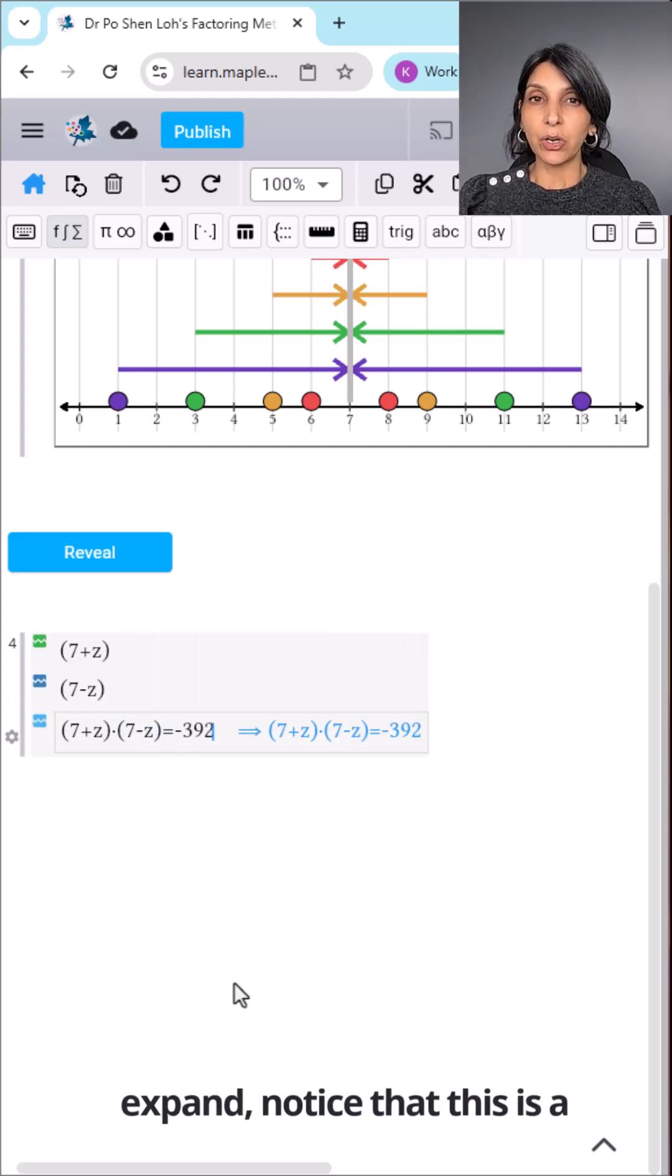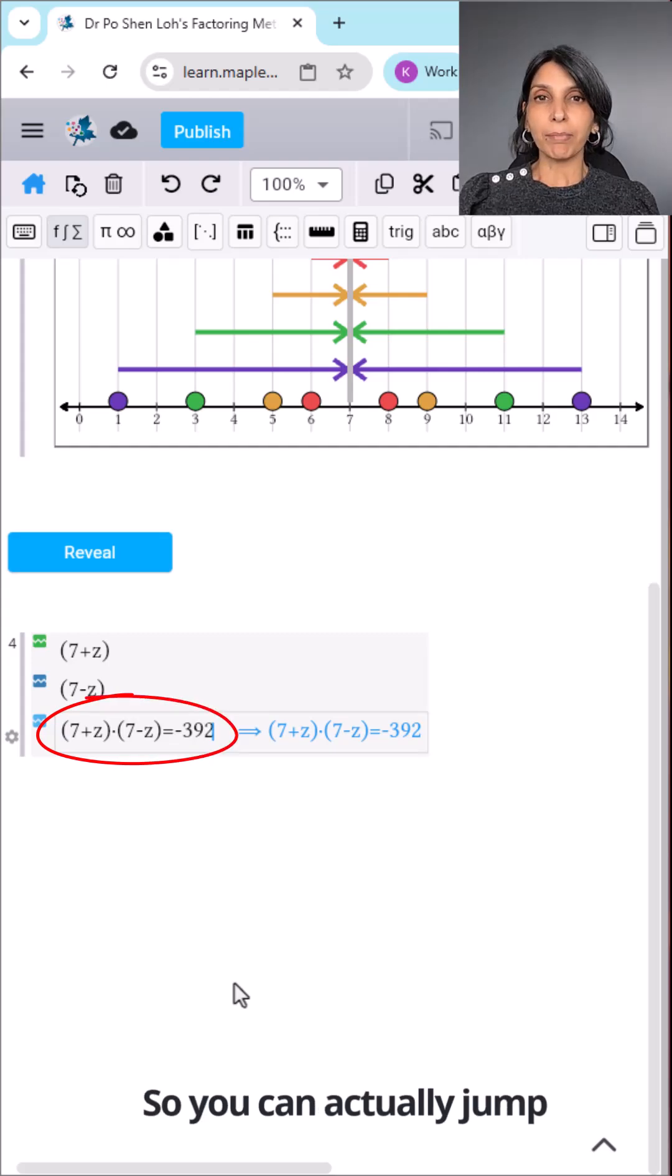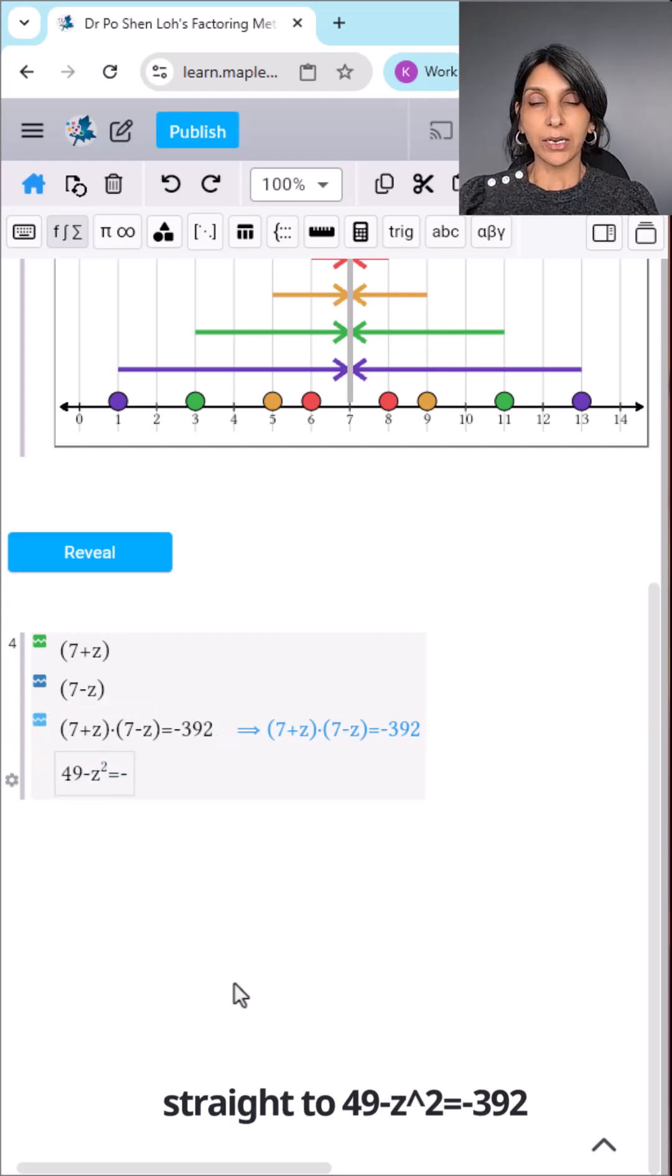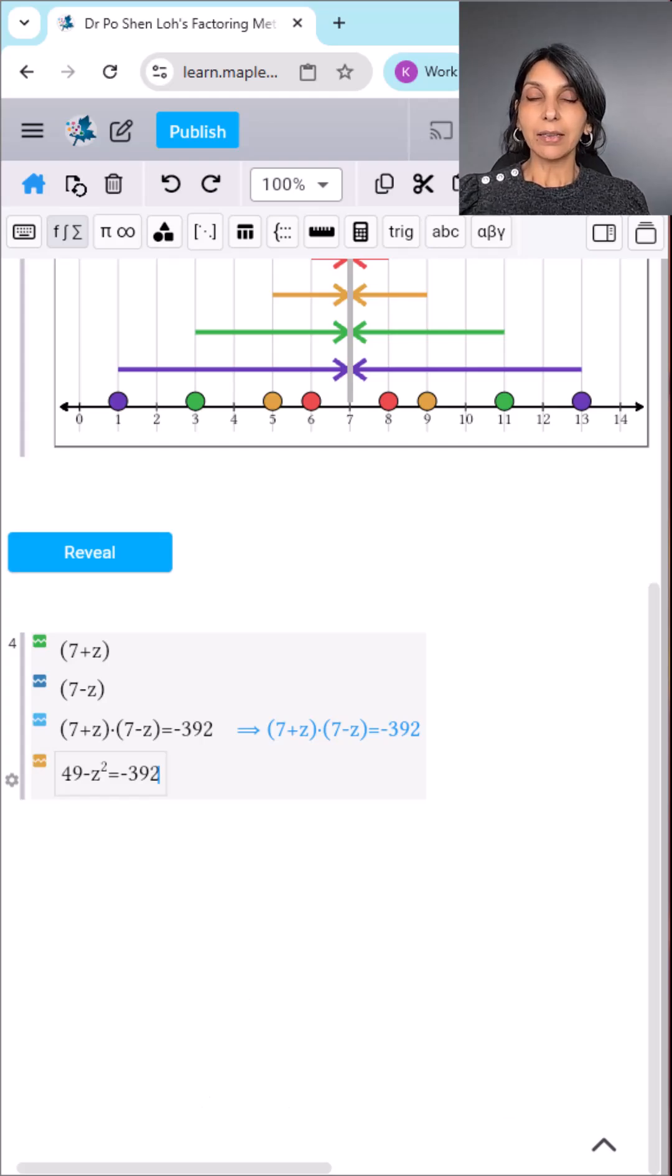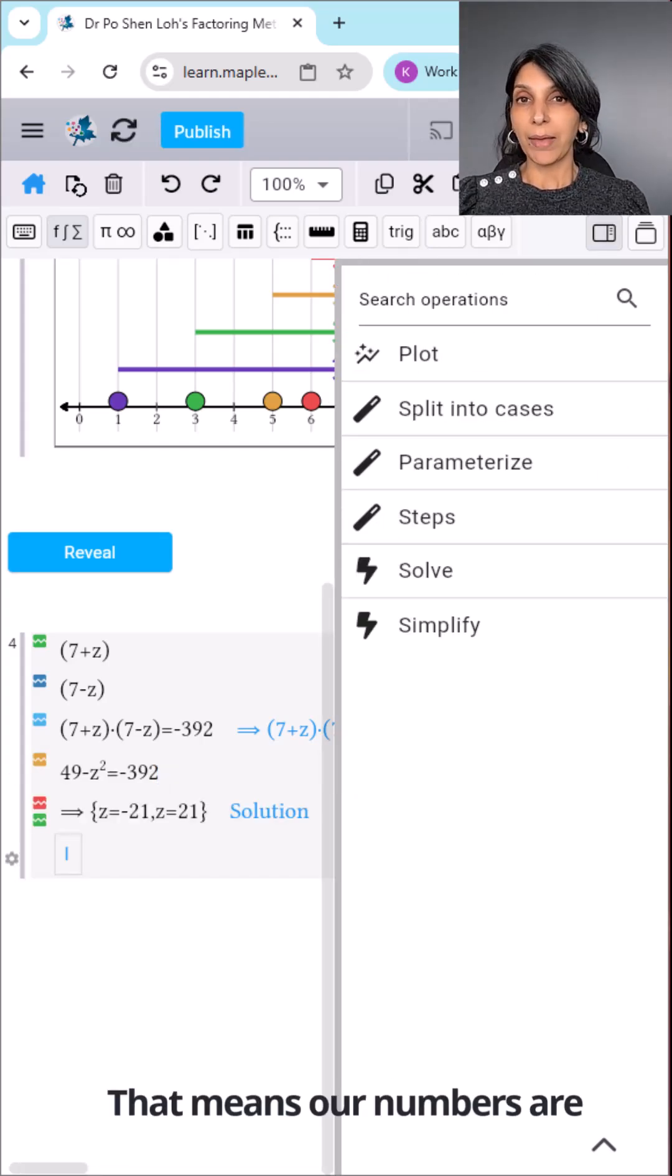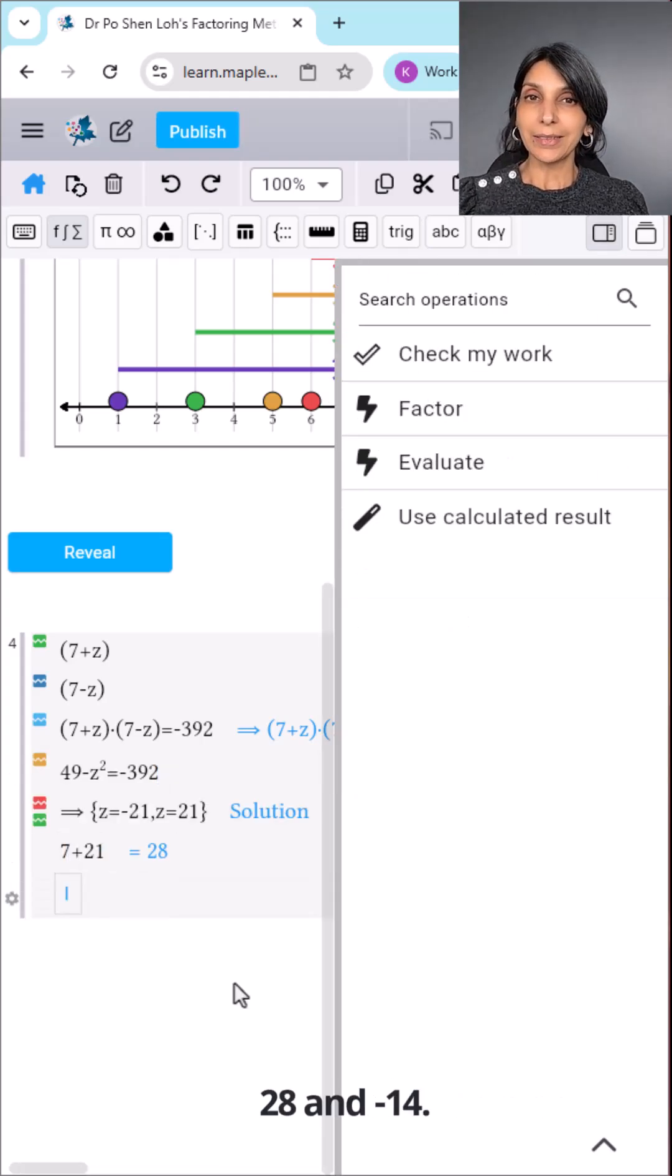Now wait. Before you expand, notice that this is a difference of squares. So you can actually jump straight to 49 minus z squared equals negative 392. So now we solve for z. z is equal to plus or minus 21. That means our numbers are 28 and negative 14.